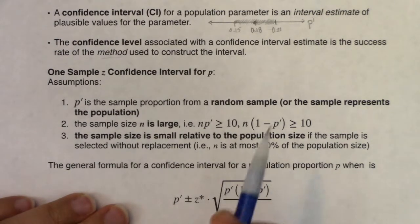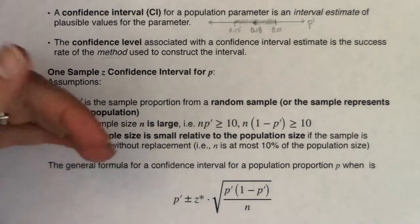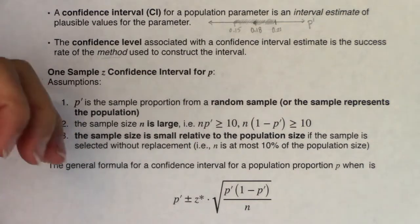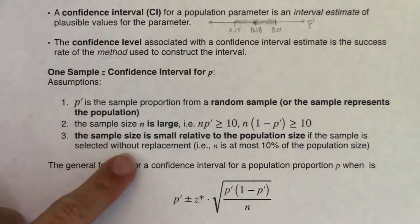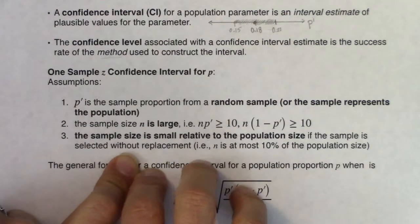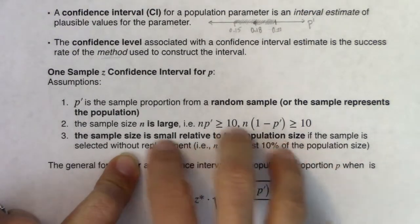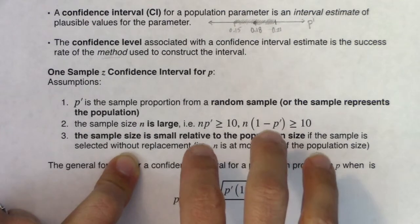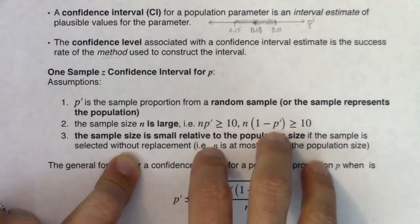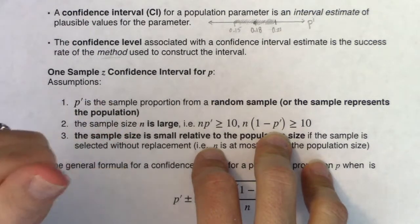Third, the sample size must be small relative to the population size when sampling without replacement — that's the at-most-10% rule. I'll explain why this matters using a deck of cards. There are 52 cards in a deck: 26 black, 26 red. Let's say a success is selecting a red card.